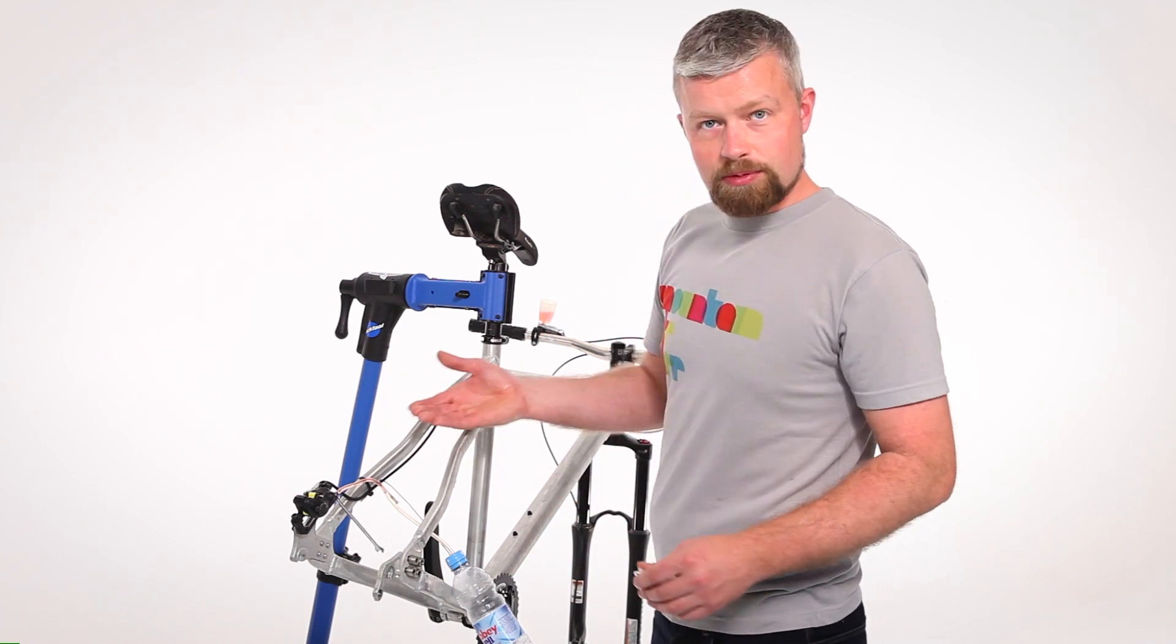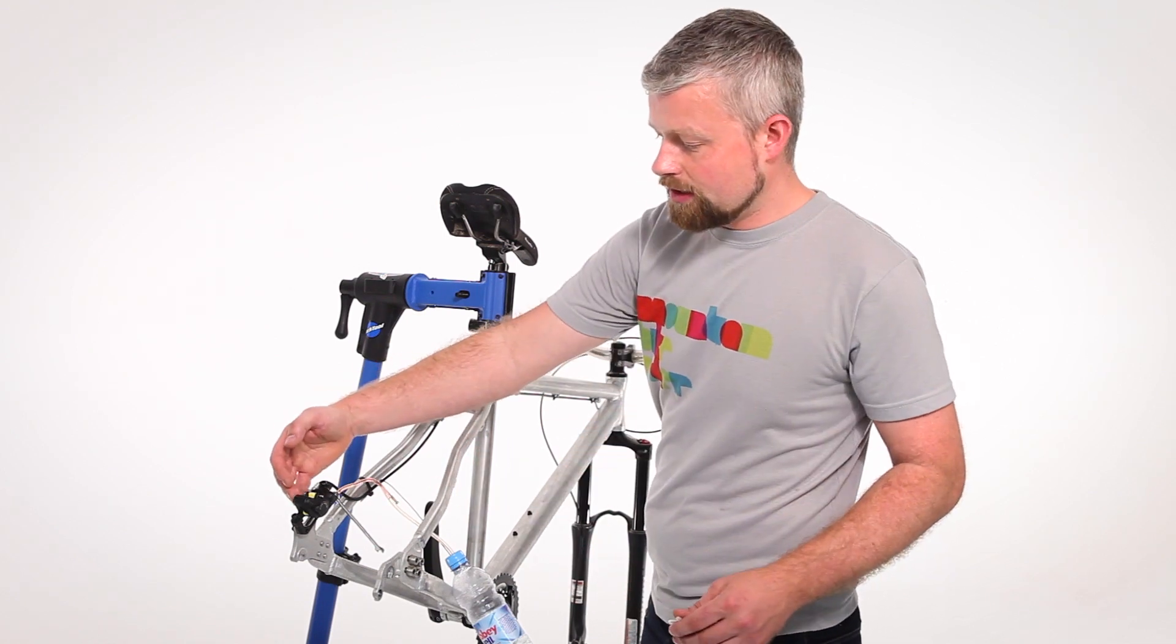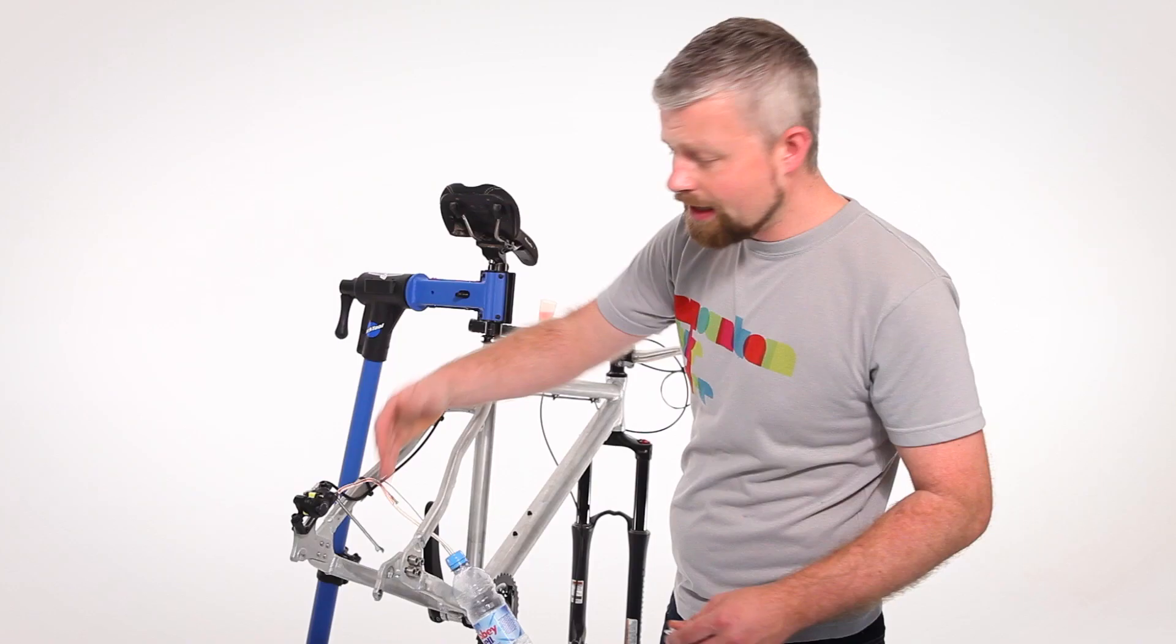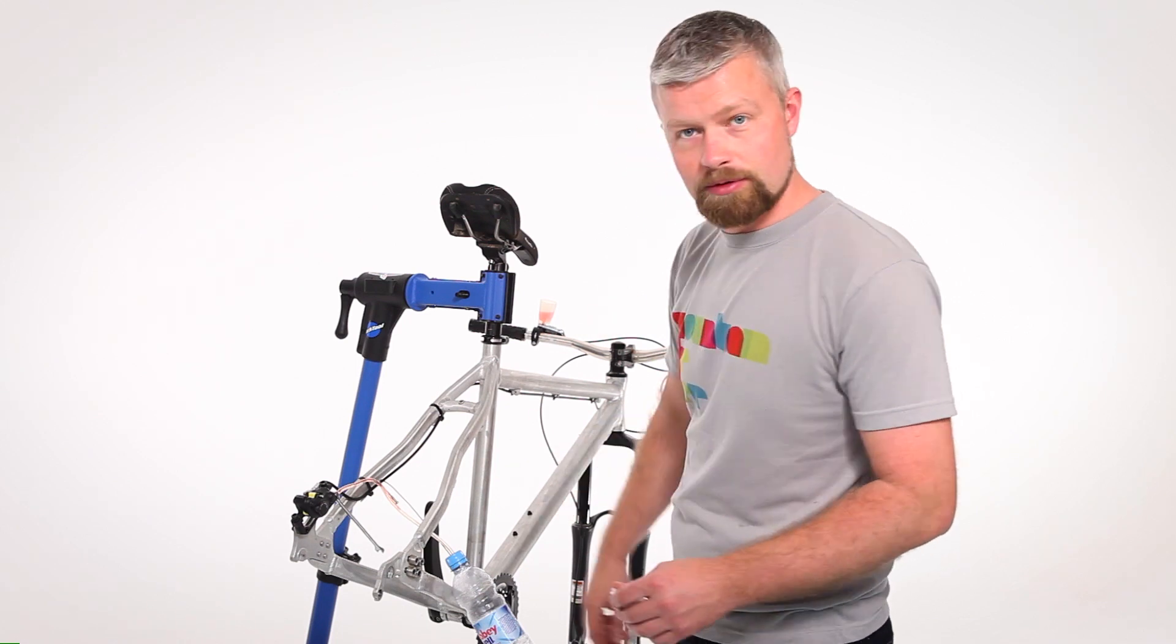If it's coming through particularly slowly, to be fair this is pretty slow at the moment, then you can remove the caliper from the frame and have it hanging straight down. That will obviously increase the speed that the oil is flowing through the system.